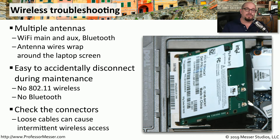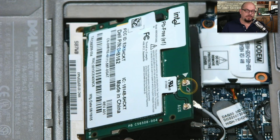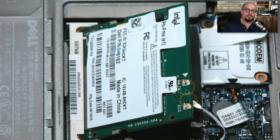If you close everything up and there's a missing antenna wire, you'll see no signal available on Bluetooth or Wi-Fi, and you'll have to go back inside the laptop to reconnect those antenna wires. Here's a close-up of those very small antenna connectors on a Wi-Fi card, with the antenna wires waiting to be installed onto the adapter.